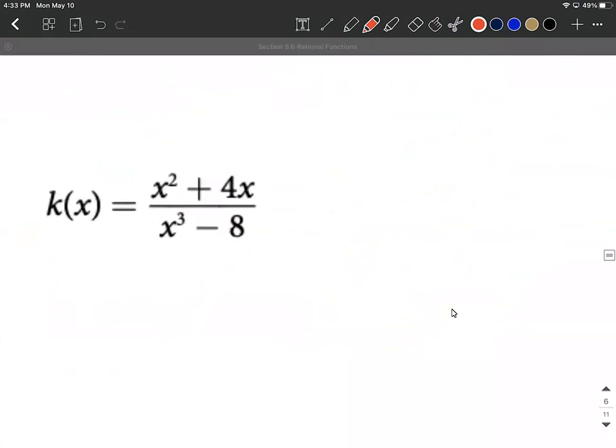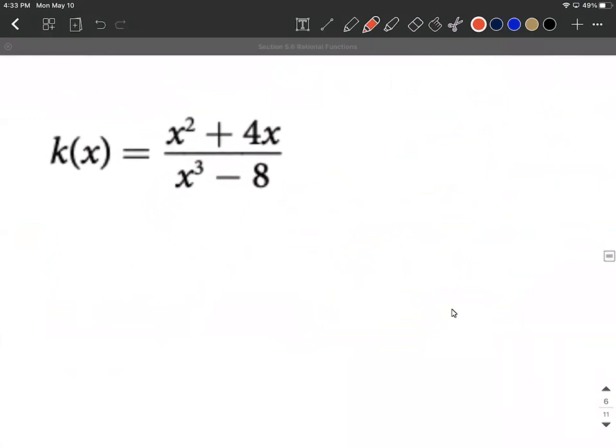One more on here. This last one, we have k of x is x squared plus 4x all over x cubed minus 8. Again, we compare the degrees. Hopefully not too bad as long as we know what we're looking for. Power on x, the highest power on x is 2 for the numerator, so degree 2 polynomial over a degree 3 polynomial.